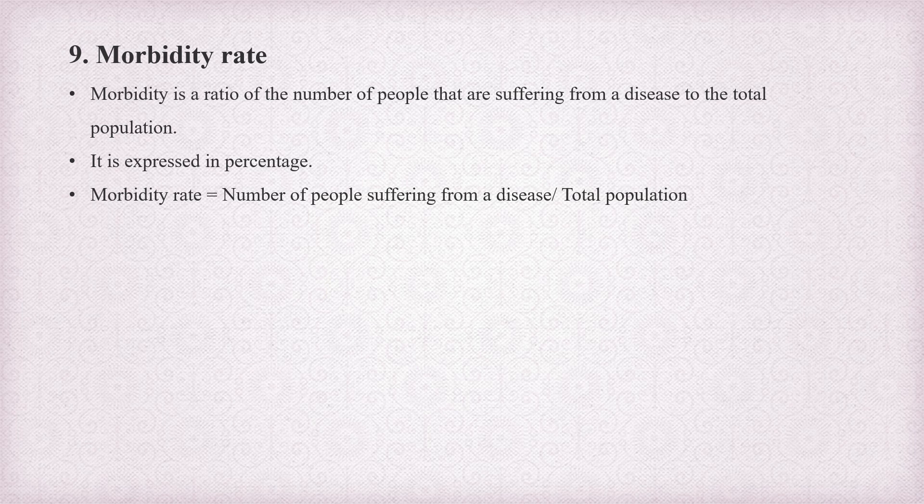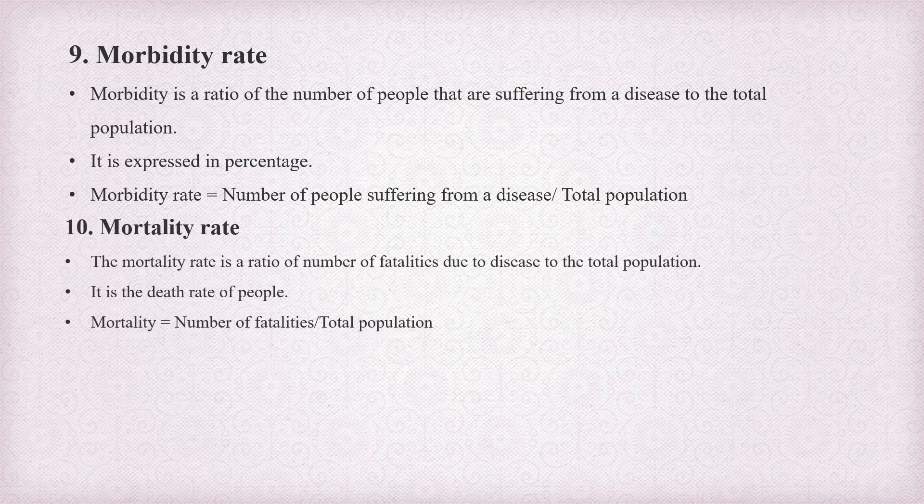The ninth concept is morbidity rate. Morbidity is the ratio of the number of people suffering from a disease to the total population, expressed as a percentage. For example, if the total population is 1000 people, the morbidity rate tells us how many of those 1000 people are suffering from that disease.